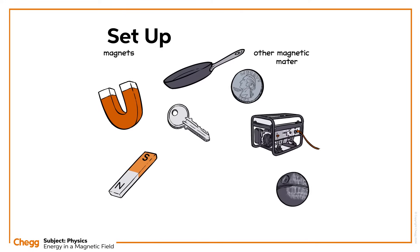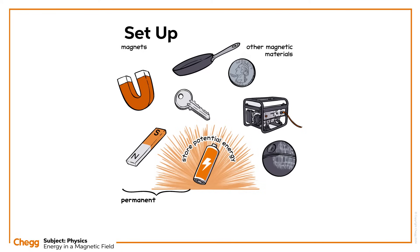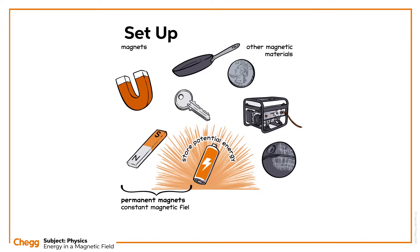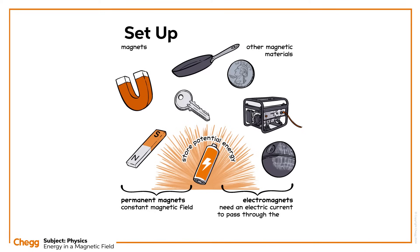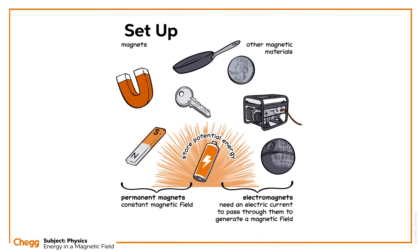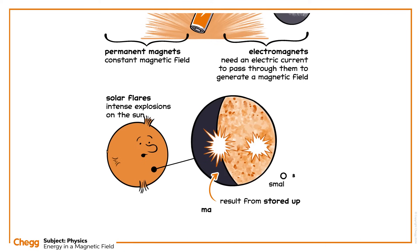Magnets and other magnetic materials store potential energy. This is true whether they are permanent magnets with a constant magnetic field, or electromagnets which need an electric current to pass through them to generate a magnetic field. Did you know that solar flares, intense explosions on the sun, actually result from this stored up magnetic potential energy being released?